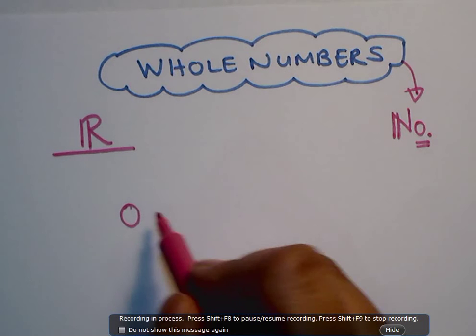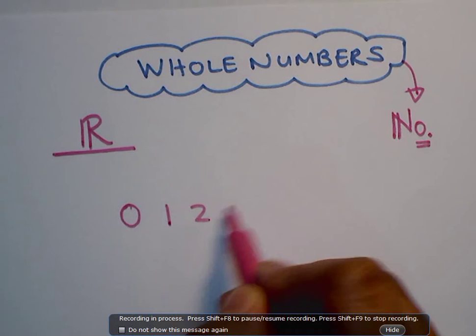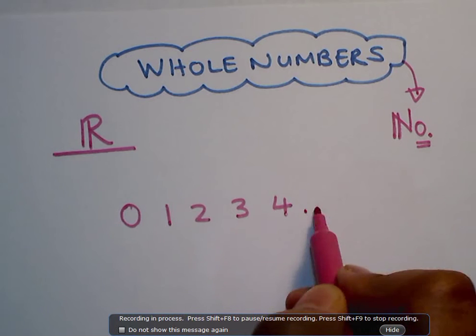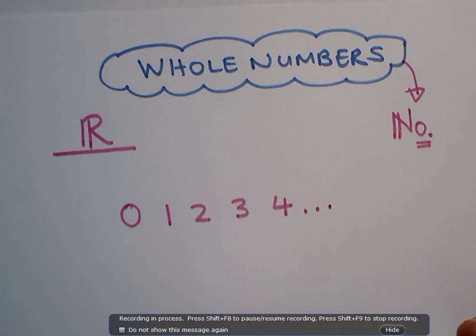So it will be 0, 1, 2, 3, 4, all the way to positive infinity. That is what whole numbers are. Whole numbers are used mostly for counting and in counting purposes.